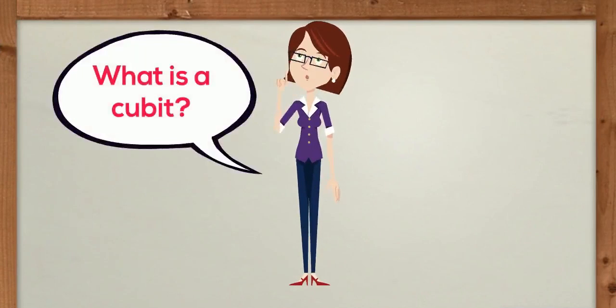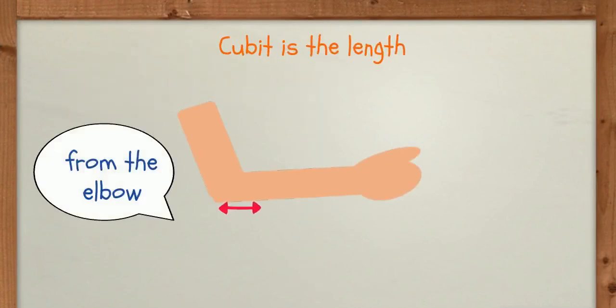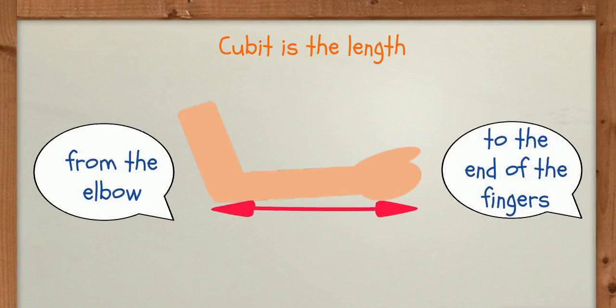Next, we have cubit. Cubit is the length from the elbow to the end of the fingers.